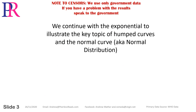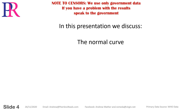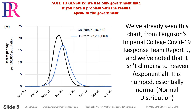We continue with the exponential to illustrate the key topics of humped curves and the normal curve, also known as the normal distribution. In this presentation, we discuss the normal curve. We've already seen this chart from Ferguson's Imperial College COVID-19 Response Team Report 9, and we've noted that it isn't climbing to heaven — it is humped, essentially normal.